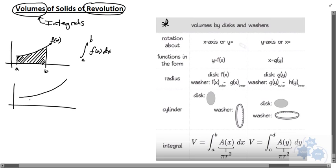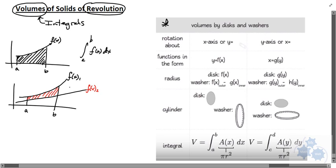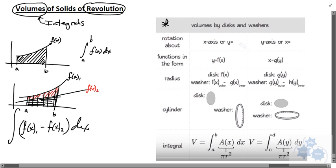We've also done areas between curves. Let's say we have a curve and another straight line, and we're looking to find the area between the two curves — below the upper function f(x₂) and above the lower one f(x₁). We looked at that in chapter 10. You could find the integral of the area underneath the upper one and subtract the area underneath the lower one, or combine the functions right away.